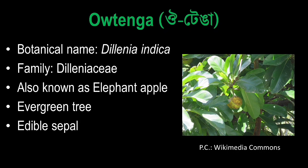Next question: Oatengar has a scientific name called Dillenia indica and a family of Dillenia. The elephant apple is an elephant apple. Oatengar is an evergreen tree and it is an elephant apple.